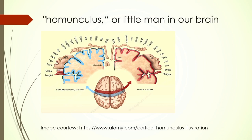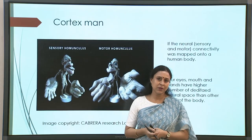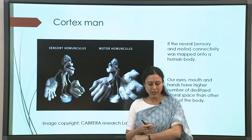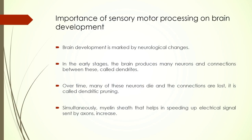This is called the homunculus, or the 'little man in our brain.' In the somatosensory cortex, the sensory map has a large area for the face — eyes, nose, mouth, and tongue — because we understand a great deal about the world through our senses. This is called a cortex man: if the sensory or motor map were a human, this is how it would look. This gives us an idea of what we mean by the sensory motor map in the brain, which we will be using to understand later things.